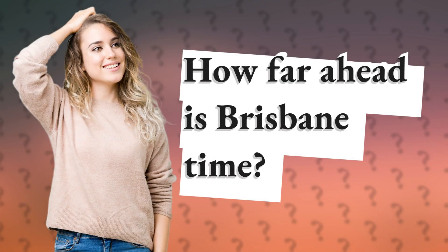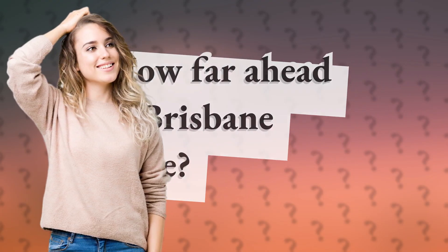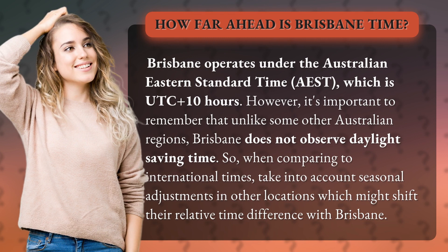How far ahead is Brisbane time? Brisbane operates under the Australian Eastern Standard Time, AEST, which is UTC plus 10 hours. However, it's important to remember that unlike some other Australian regions, Brisbane does not observe daylight saving time. So, when comparing to international times, take into account seasonal adjustments in other locations which might shift their relative time difference with Brisbane.